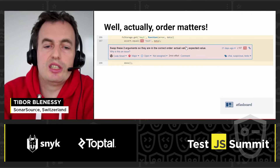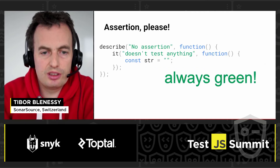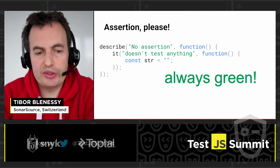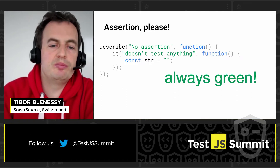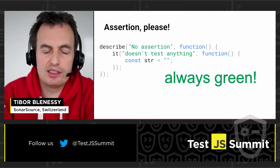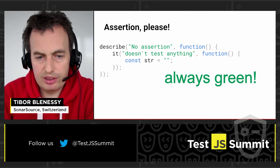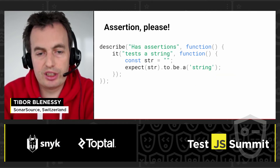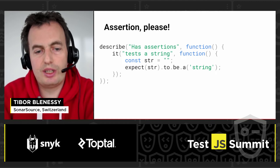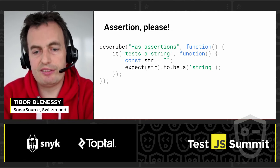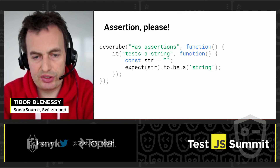The third issue I would like to show you in this lightning talk is the following one: imagine you have a test, and this test is going to be always green — why? Because there is actually no assertion in it, so you are not testing anything. To fix this test, you should actually assert something — for example, assert that this string has the value of string.